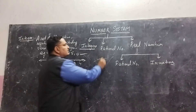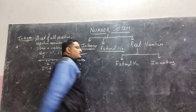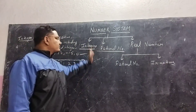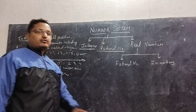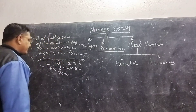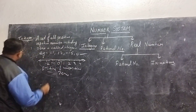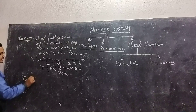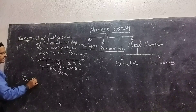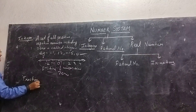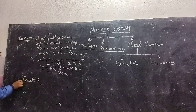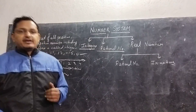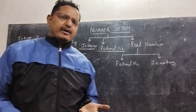Now we will come to know what is a fraction number. Before that, I will explain about fractions. What is a fraction? Generally, we say that a fraction is a number which is expressible in the form of P by Q, or A by B in general.